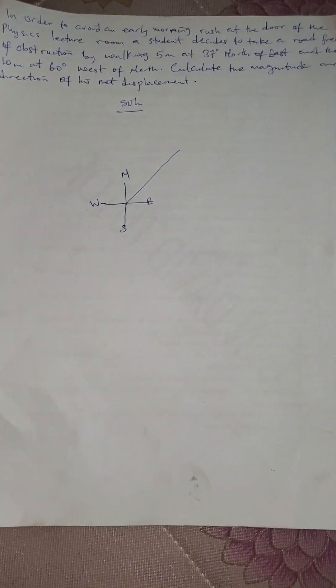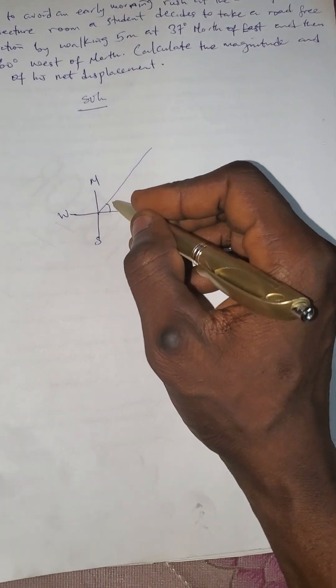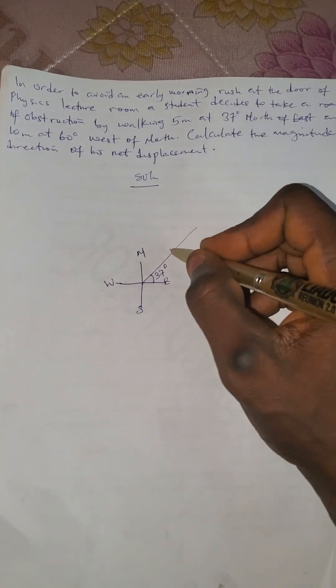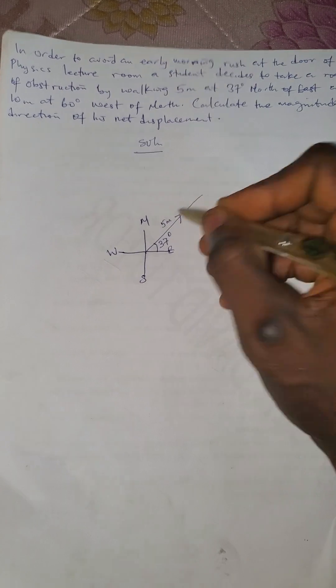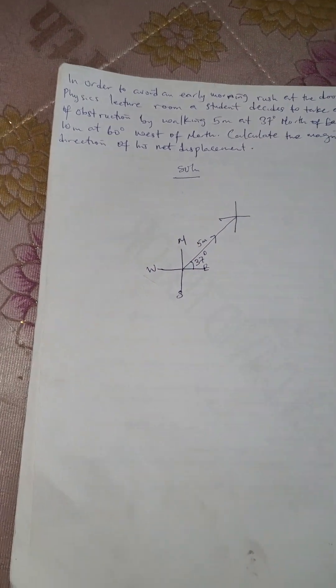So the direction is going to end at east, and that's why we have 37 degrees here. Five meters at 37 north of east — it's moving like this. And then from here, still moving 10 meters at 60 degrees west of north.